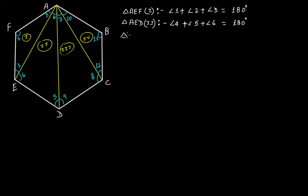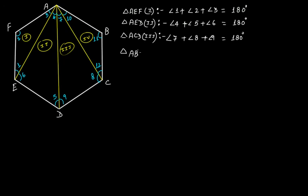Then triangle 3, that is triangle AED: angle 7 plus angle 8 plus angle 9 is equal to 180 degrees. Then, from triangle 4, you have angle 10 plus angle 11 plus angle 12, this is equal to 180 degrees.